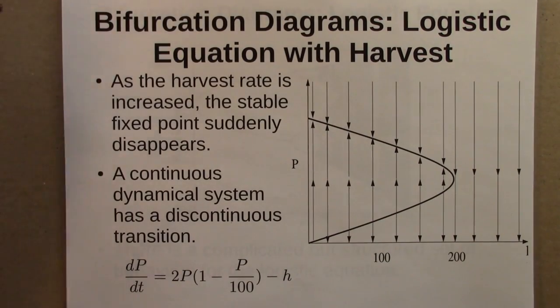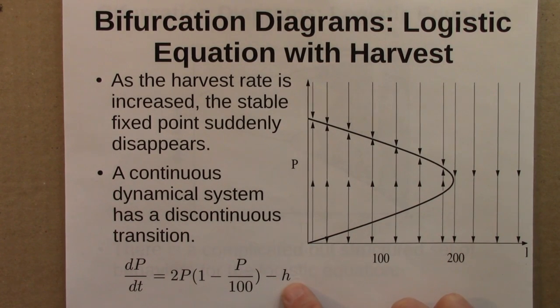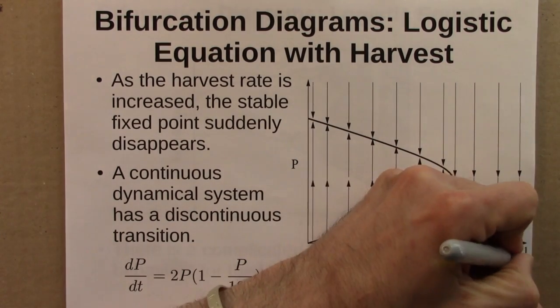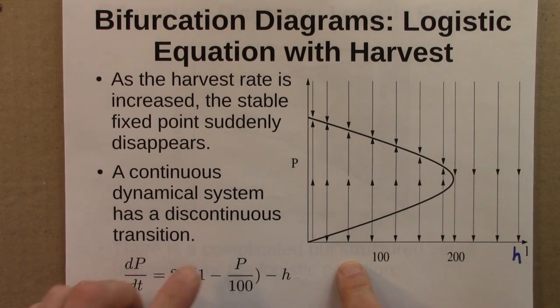So here's one of the first bifurcation diagrams we looked at. This is the logistic equation with harvest, the equation is down here. And so h is the parameter that I'm changing. h, I got cut off here, there's h.